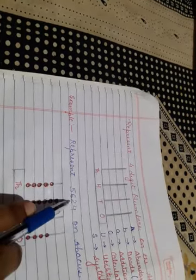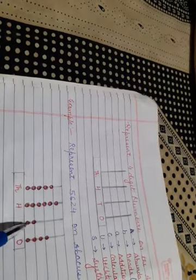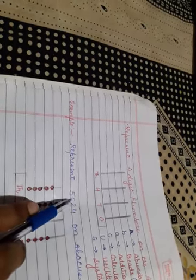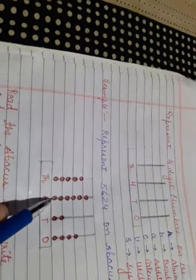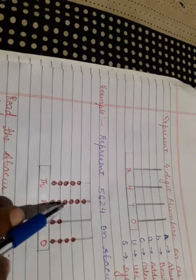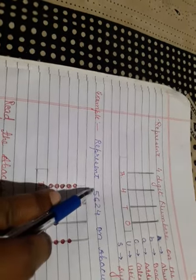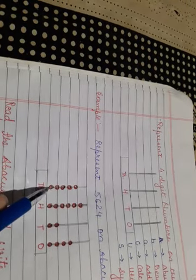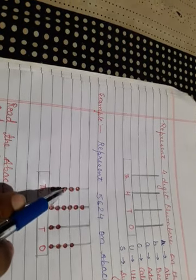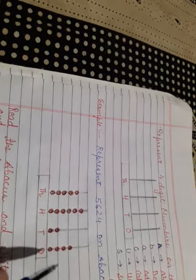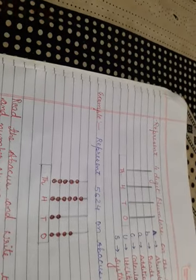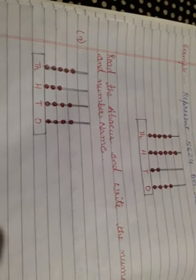In this number, the first place from the right side is four, so you put four beads. On the second place you put two beads. The third place from the right side is six, so you put six beads. And the fourth place is five, so you put five beads.